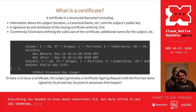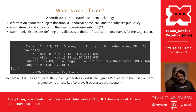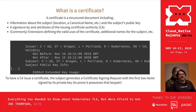What is a certificate? At base, a certificate is just a structured document. It has information about the subject, the subject's public key, and a signature from a certificate authority. Most of them have extensions — defined in a later update to the standard — that define things like what you can use that certificate for: code signing, server communications, or whether it can be a certificate authority.